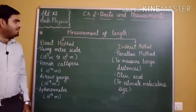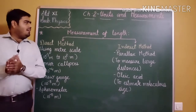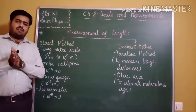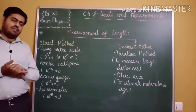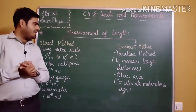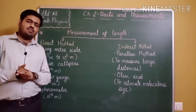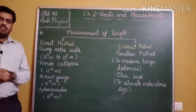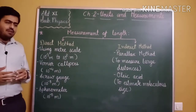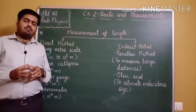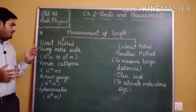The next topic is measurement of length. Measurement of length can be done using two methods: one is the direct method and another is the indirect method. The direct method is already known to you — using any instrument we can directly measure length. For example, we can measure length using a meter scale.